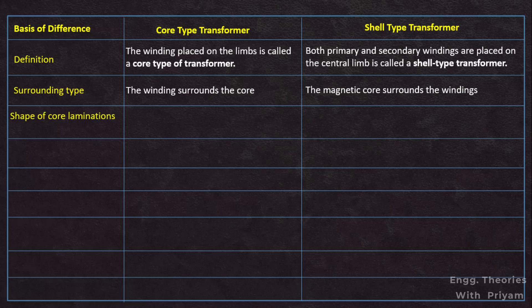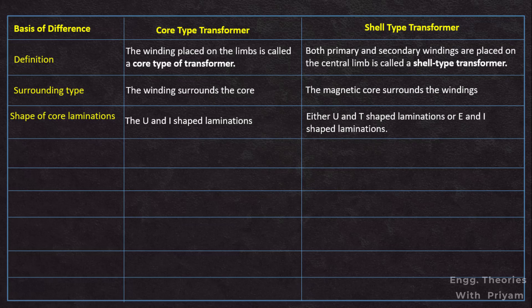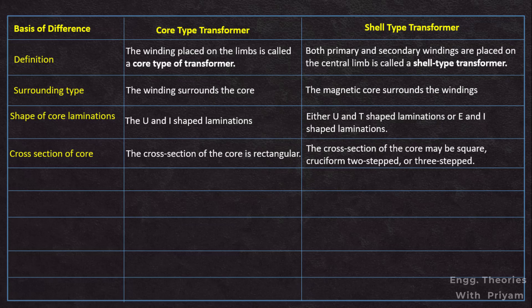Regarding core lamination shape: in the core type, U and I shaped laminations are used; in the shell type, U or T shaped, or E and I shaped laminations are used. The cross section of the core type transformer core is rectangular, but the shell type transformer core may be square or cruciform — two-step or three-step. In the core type transformer there are two limbs and two yokes, while in the shell type transformer there are three limbs and two yokes.